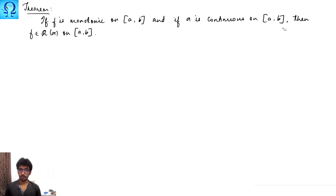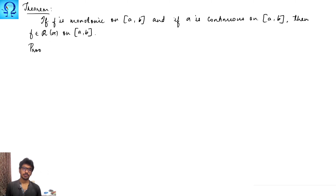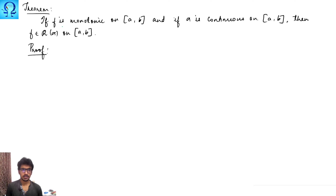Welcome back to a course on calculus RS integration. In this lecture, we are going to see a theorem which states: if f is monotonic on the closed interval [a, b] and if alpha is some continuous function on [a, b], then the function is Riemann-Stieltjes integrable. This is what we are going to prove in this theorem.